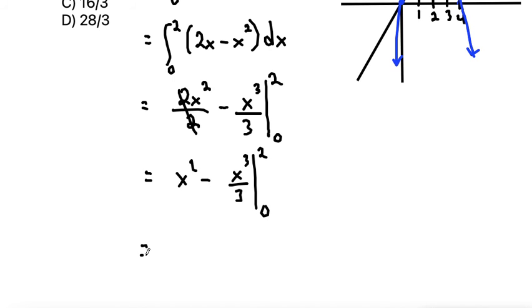Okay, now to evaluate, we plug in the top first and then we'll subtract out plugging in the bottom. So that would be 2² is 4 minus 2³ is 8, so that would be 8/3.